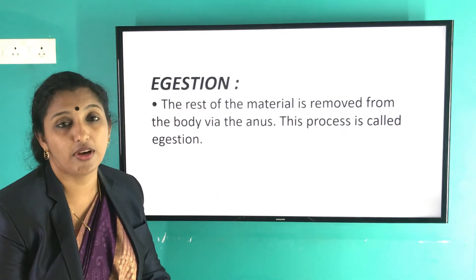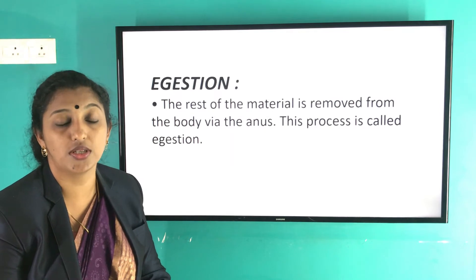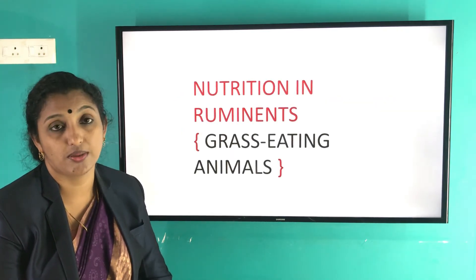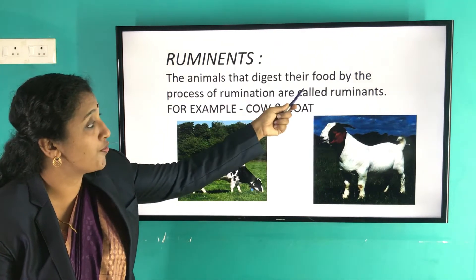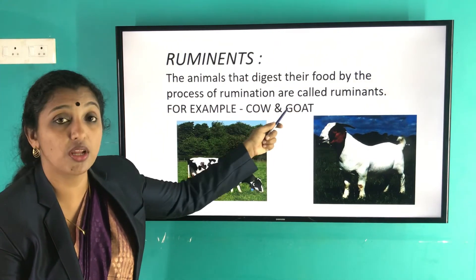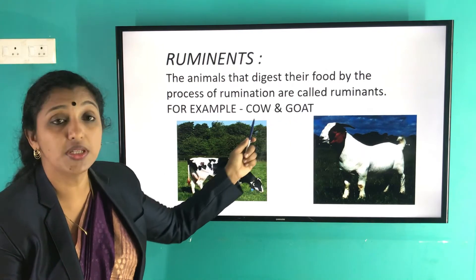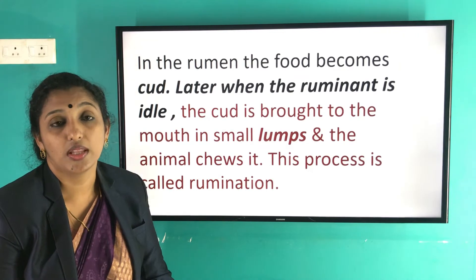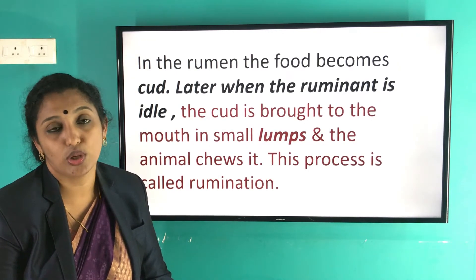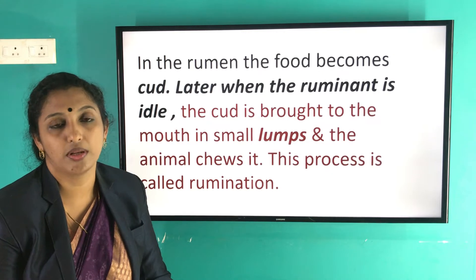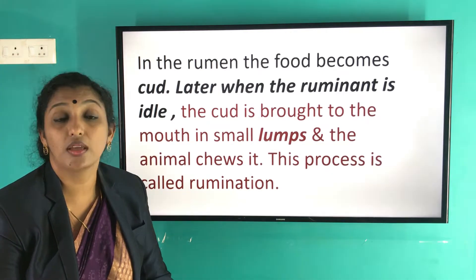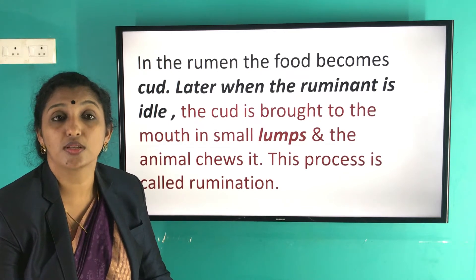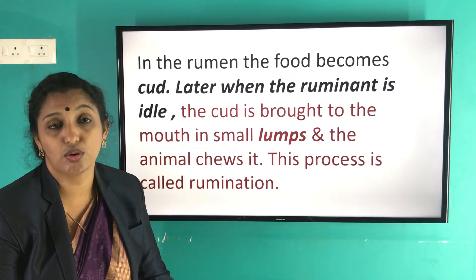The next topic is nutrition in ruminants. Grass-eating animals that digest their food by the process of rumination are called ruminants — examples are cows and goats. Their digestive system has some peculiarities. Cows eat grass continuously and swallow it because they do not chew it immediately. They swallow the food and store it in a special structure known as the rumen.